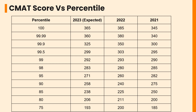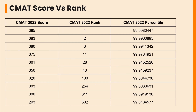For 303 marks in 2022, a candidate got a percentile of 99.5; for the same percentile, 299 marks are expected for this year. A candidate got 293 marks with 99 percentile in 2022; for this year, 292 marks are expected. These expected scores are not final and may vary from the actual data.